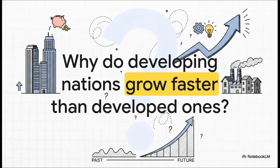So let me ask you this. Have you ever wondered why some developing economies seem to be growing at lightning speed while the big, wealthy, established ones are growing much, much slower? It feels kind of backwards, doesn't it? You'd think the richest countries would always be the ones pulling ahead. But that's not what we see. So what is going on?